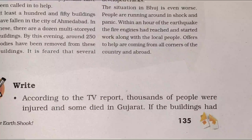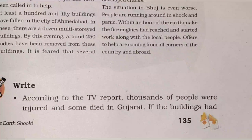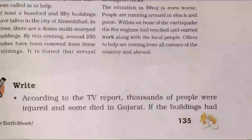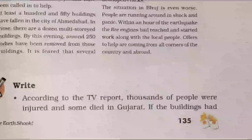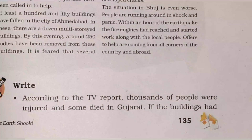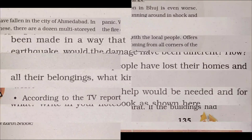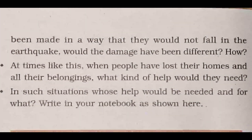According to the TV report, thousands of people were injured and some died in Gujarat. If the buildings had been made in a way that they would not fall in an earthquake, would the damage have been different? The answer is yes — there would have been the least damage, because mostly people get injured or die due to the collapse of houses and buildings.